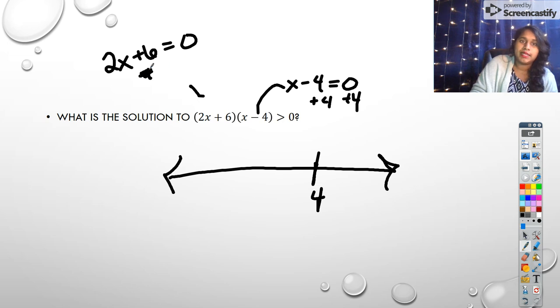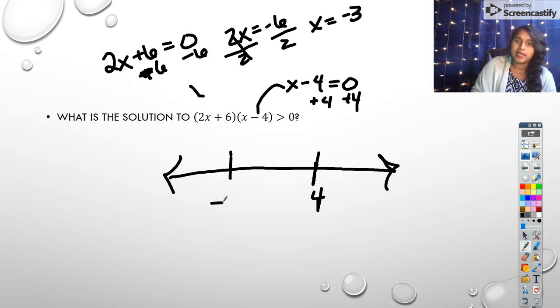2x plus six equals zero. I'm going to minus six minus six. So that becomes 2x equals negative six. I'm going to divide by two. And x, say negative six divided by two is negative three. So I have a root at negative three. Then I'm going to test some random numbers.